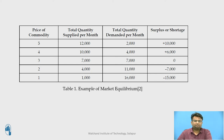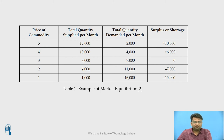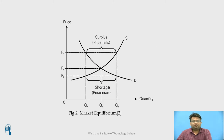Equilibrium represents the situation where there is no tendency to change the price, and it is a state of balance. Stated differently, the price of X will be established where the supply decisions of producers and the demand decisions of buyers are mutually consistent. Graphically, the interaction of the supply and demand curves indicates the equilibrium point E, as shown in the figure.